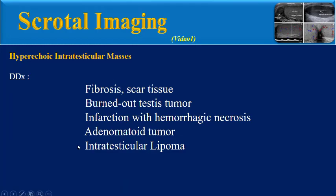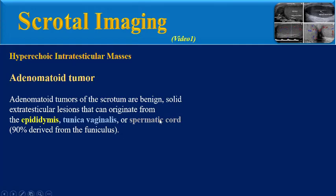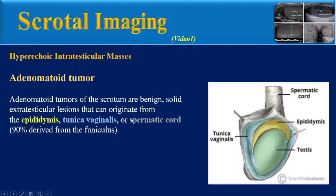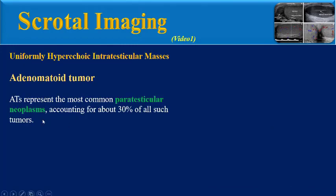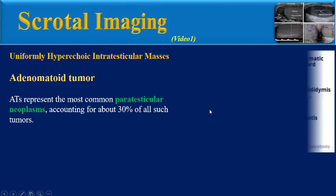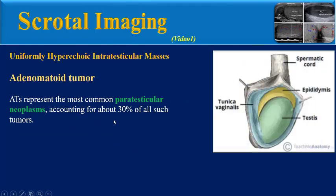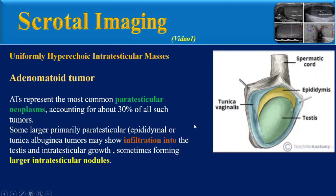Another entity in the differential diagnosis is adenomatoid tumor. Adenomatoid tumors of the scrotum are benign solid extratesticular lesions that can originate from the epididymis, tunica vaginalis, or spermatic cord. These tumors represent the most common paratesticular neoplasms, accounting for about 30% of all such tumors. Some larger paratesticular tumors may show infiltration into the testis and intratesticular growth.